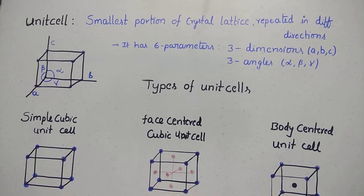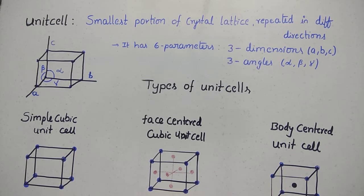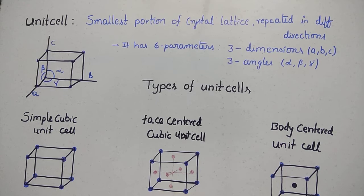Solids are two types: amorphous solids and crystalline solids. Now I will explain the topic of crystalline solids. Crystalline solids are those solids in which the particles are highly ordered, in fixed positions in a regular manner. That is crystalline solids.